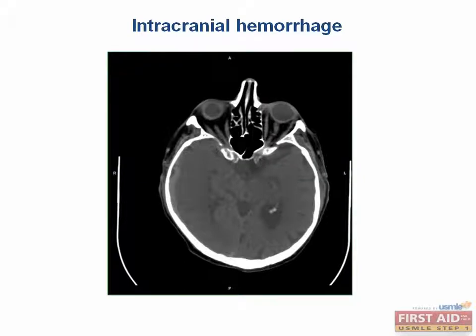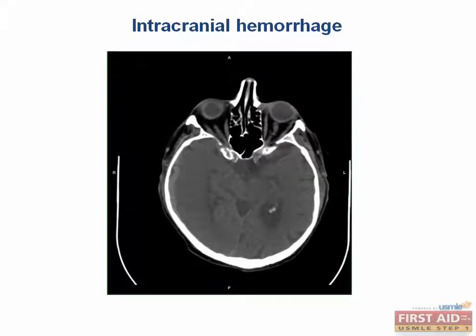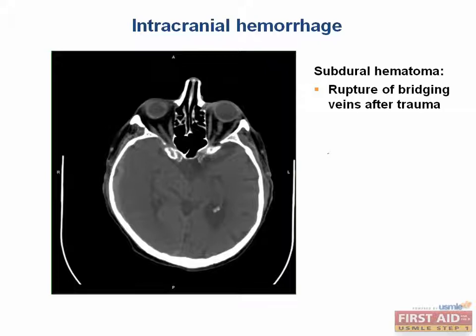Subdural hematomas occur in the potential space between the dura and the arachnoid layers. They are usually caused by a rupture of the bridging veins after trauma. The people most susceptible to developing subdural hematomas are the elderly because they often have diffuse cerebral atrophy that allows the brain to move more freely in the skull, leading to injury of the veins. Shaken babies, alcoholics, and those with brain contusions are also at risk.